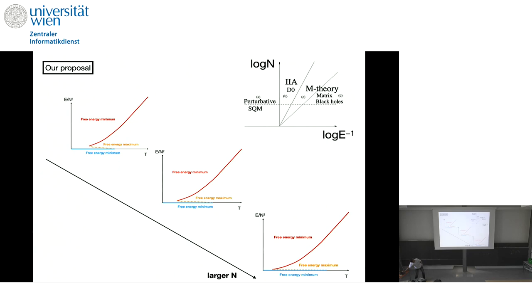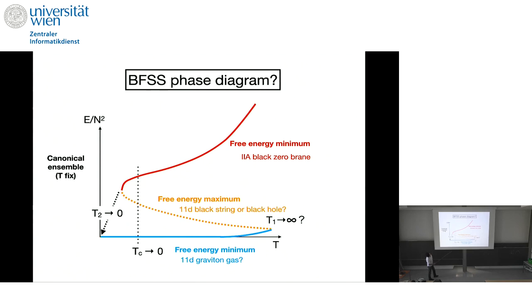Maybe in the question time or maybe after the talk, if you're interested, I can explain more. This picture is a bit harder to see. So I try to describe the same thing in a different picture. So here, we have the deconfined phase, which is dual to type 2A black zero brane. And we saw tunneling to confined phase. We believe that this is happening because the 11 dimensional black string or black hole is sitting between these two phases. And as a free energy maximum. And there are two free energy minima, so we can see two state signal.